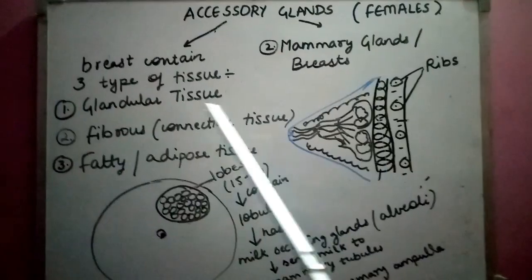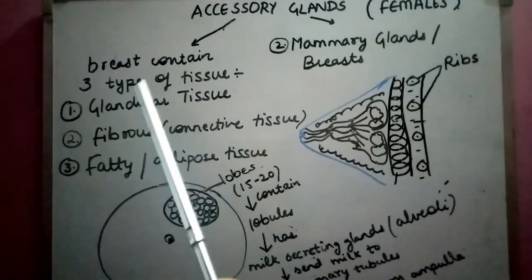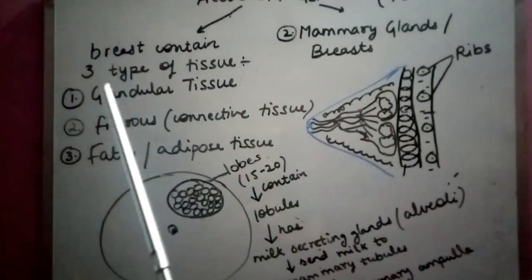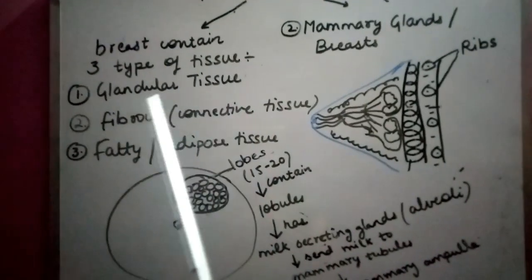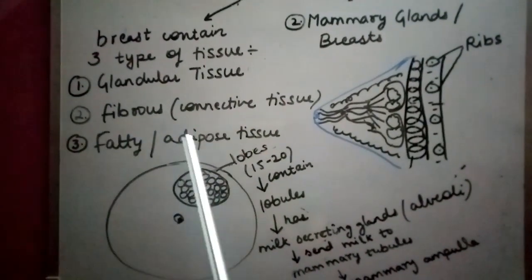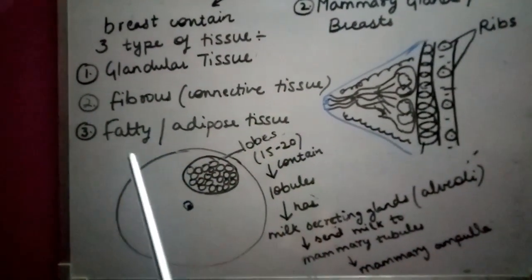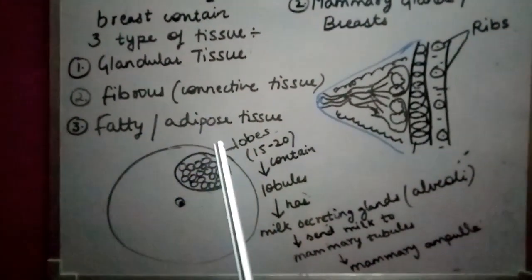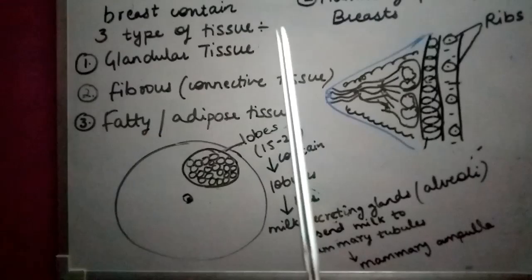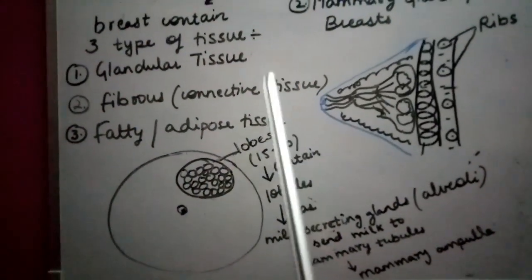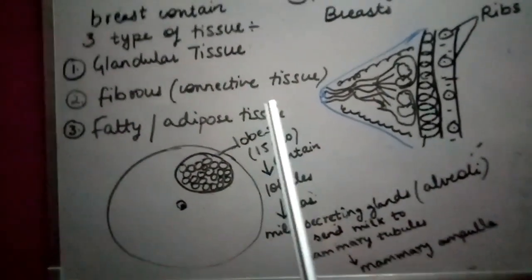Breasts contain three types of tissue: glandular tissue, fibrous or connective tissue, and fatty or adipose tissue.